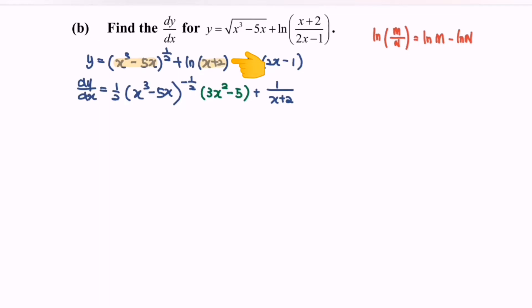For the ln bracket 2x minus 1, we will have 1 over 2x minus 1. Do remember to differentiate the internal function, and we will have 2.